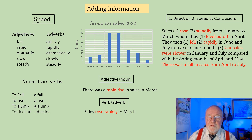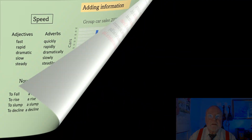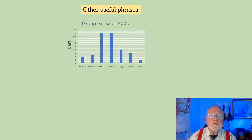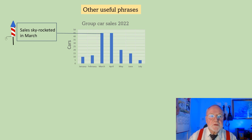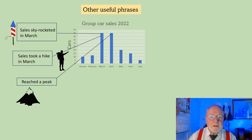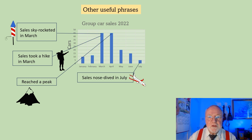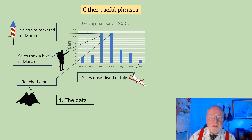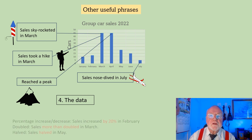There are one or two more phrases you can use. For sales that rise rapidly you can use the idiom: 'Sales skyrocketed in March.' 'Sales took a hike in March.' And 'Sales reached a peak.' If sales are going the other way — downwards fairly quickly — you can say 'Sales nosedived in July.'